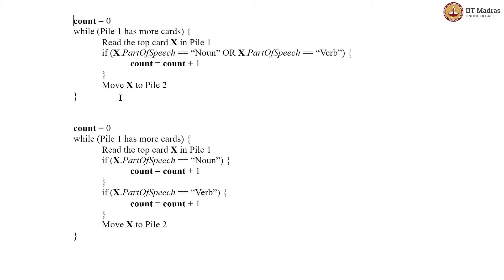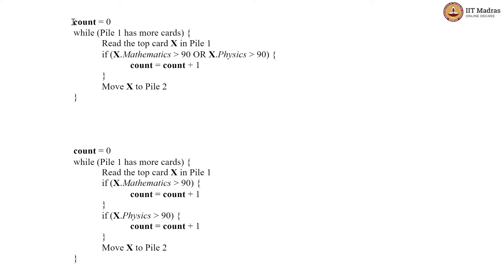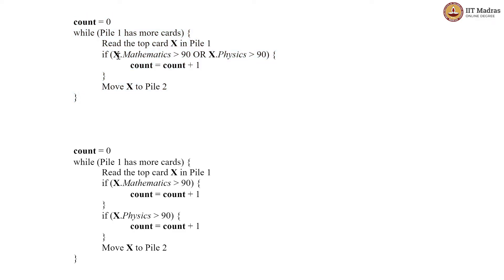However, this does not always play out like this. Consider a situation like this. While pile1 has more cards, we are looking at x dot mathematics and x dot physics — so this is the scores dataset. We read the top card and we check if the mathematics score in that card is greater than 90 or the physics score in that card is greater than 90.